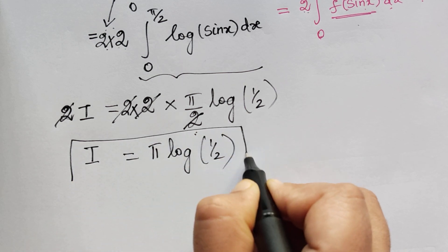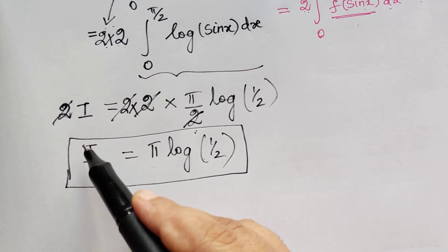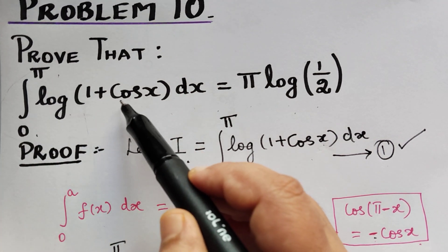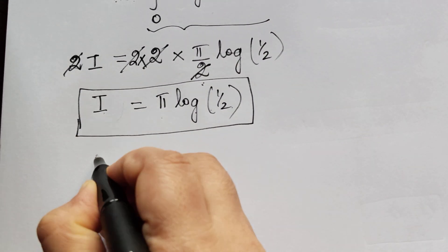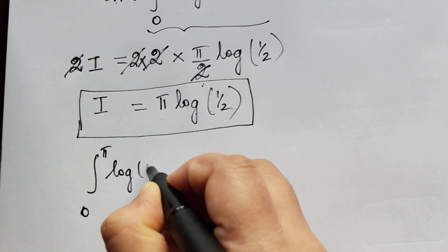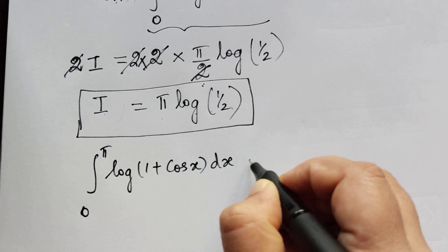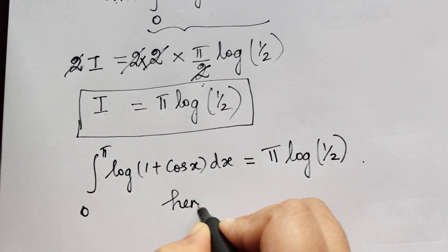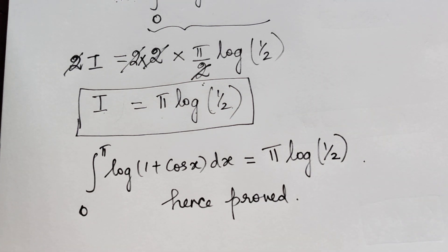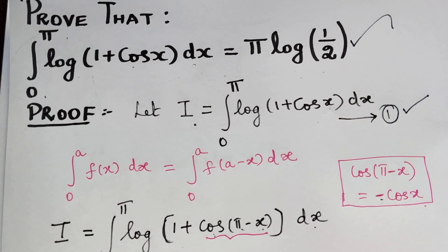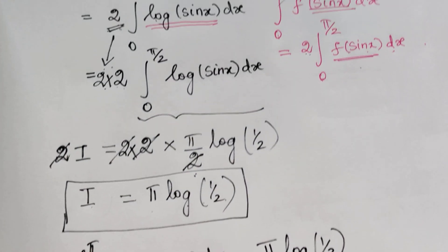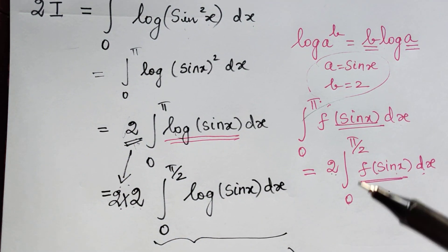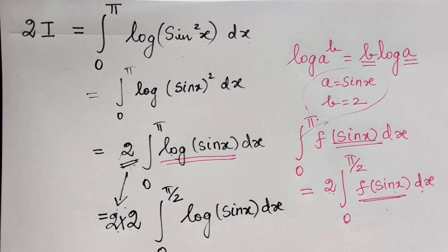Therefore we have evaluated I to be equal to pi logarithm of 1 by 2. Since I is the integral from 0 to pi of logarithm of (1 + cos x) dx, we have proved that this integral equals pi logarithm of 1 by 2, which is exactly what was required. Kindly go through these calculations patiently. I hope you have understood this problem. Thank you.